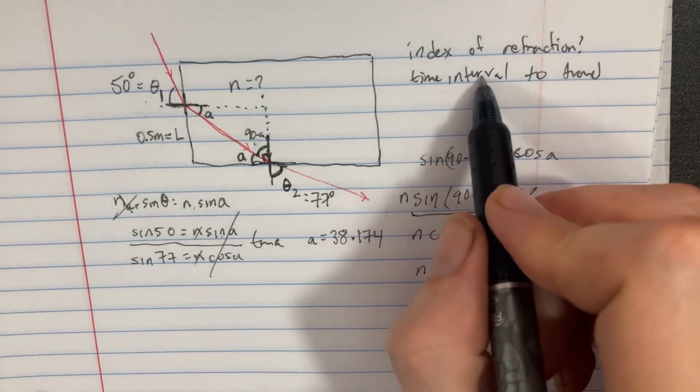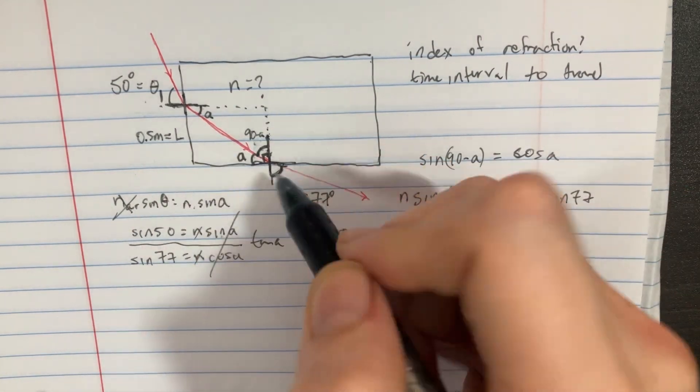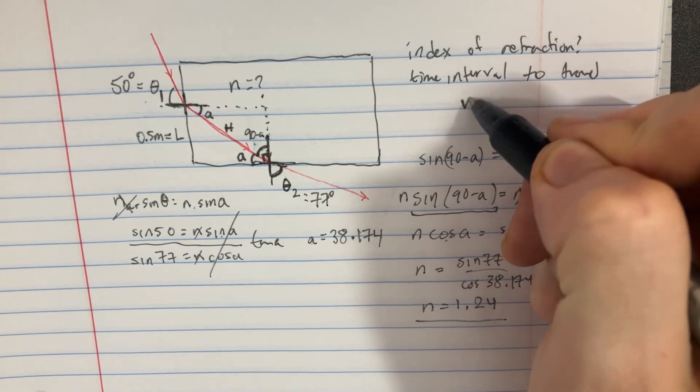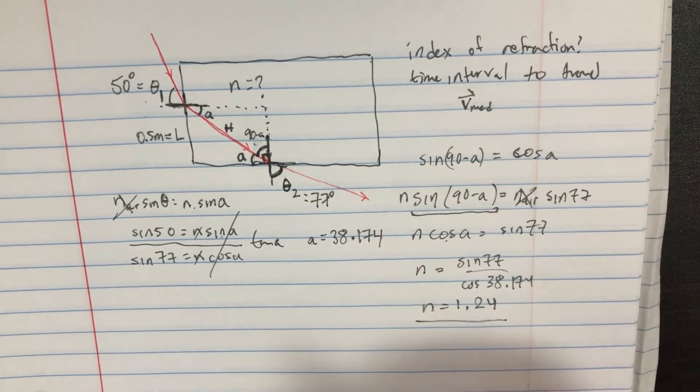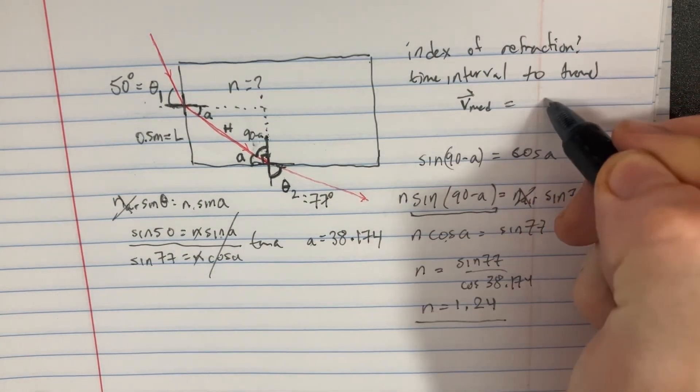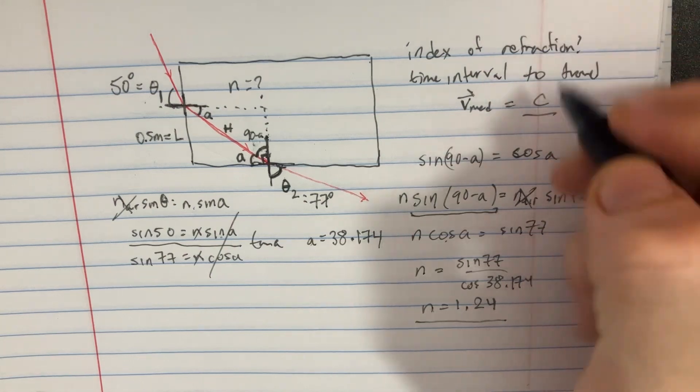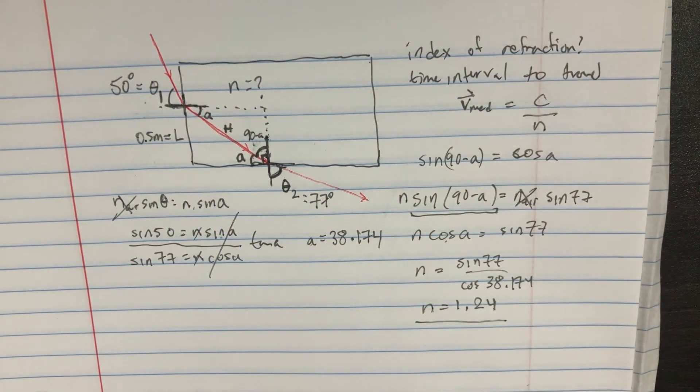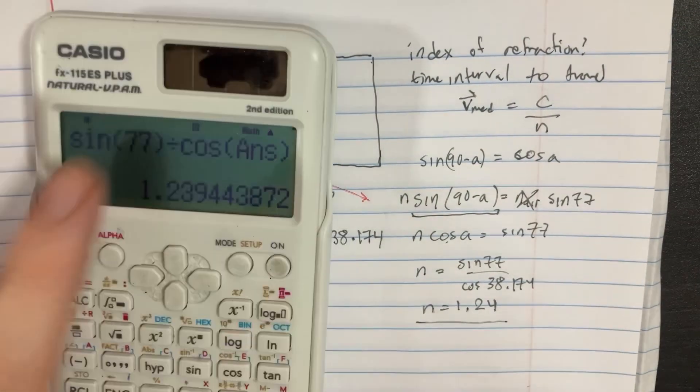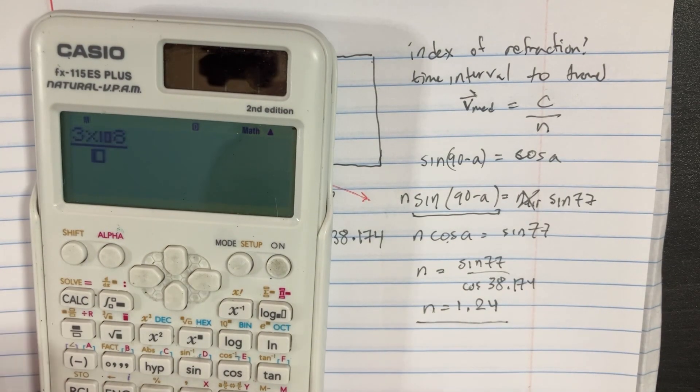Now let's see if we could figure out the time interval that it would take to travel this distance. I'll call it distance h. And we're going to want to have the velocity of the medium. In order to find that, we would take the speed of light and divide it by the n that we have.